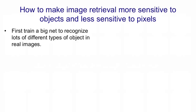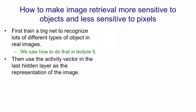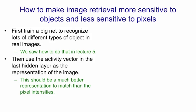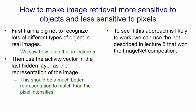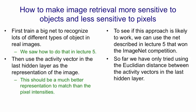We can do that by first training a big net to recognize lots of different kinds of objects in real images, as we saw in lecture 5. Then we take the activity vector in the last hidden layer of the big net and use that as a representation of the image. This should be much better than the pixel intensities at capturing information about the kinds of objects in the image. To see if this approach is likely to work, we used the net from lecture 5 that won the ImageNet competition. So far we've only tried it on Euclidean distance between the activity vectors in the last hidden layer. But if it works for that, we could then take those activity vectors and build an autoencoder on those to get them down to binary codes. It turns out it works really well, though we don't know yet whether it will work with binary codes.